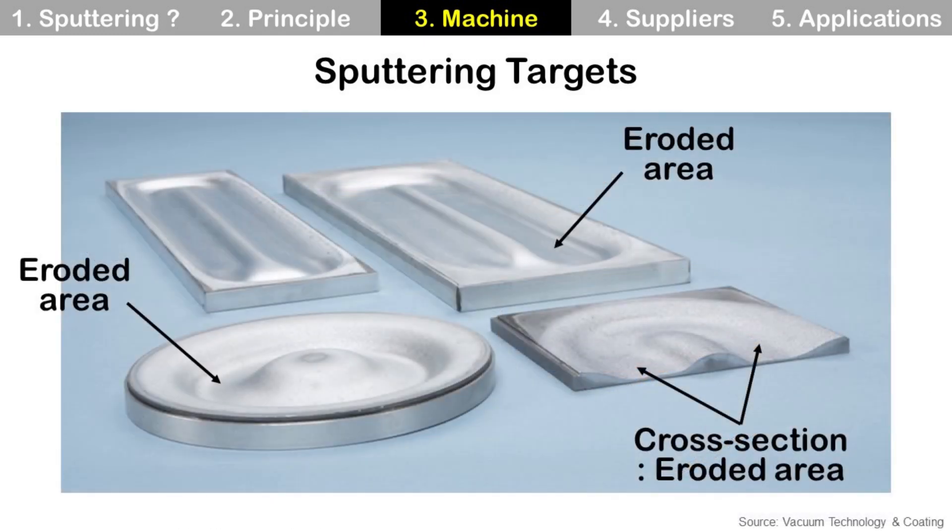As I mentioned before, argon ions eject target material, so after some use, targets look like this. We can see eroded areas on the target surface which are ejected by argon ions. At the right, we can see the cross-section and understand how much material has been ejected.